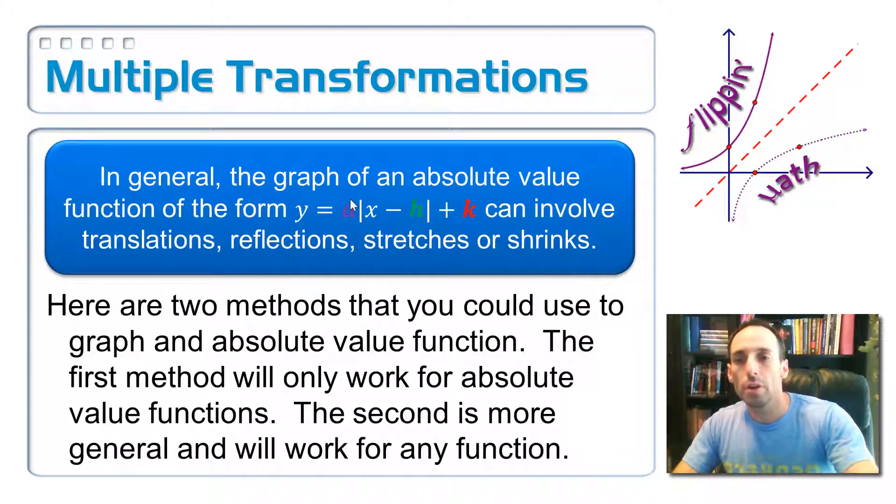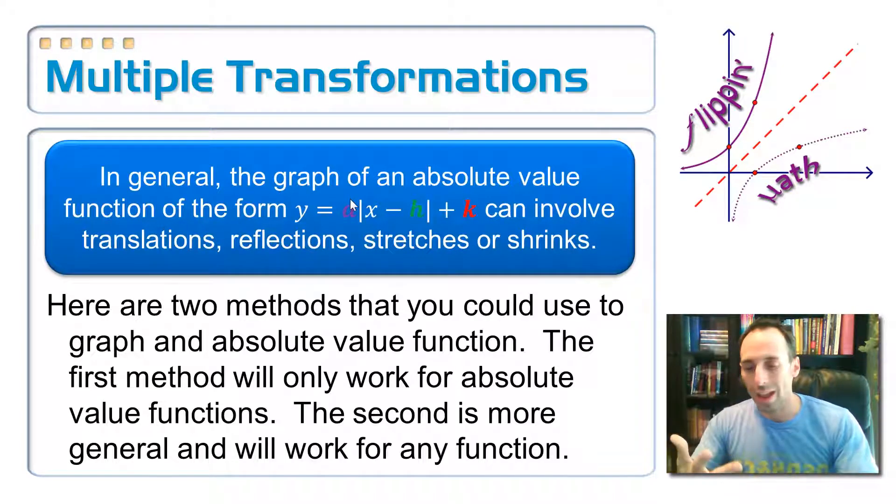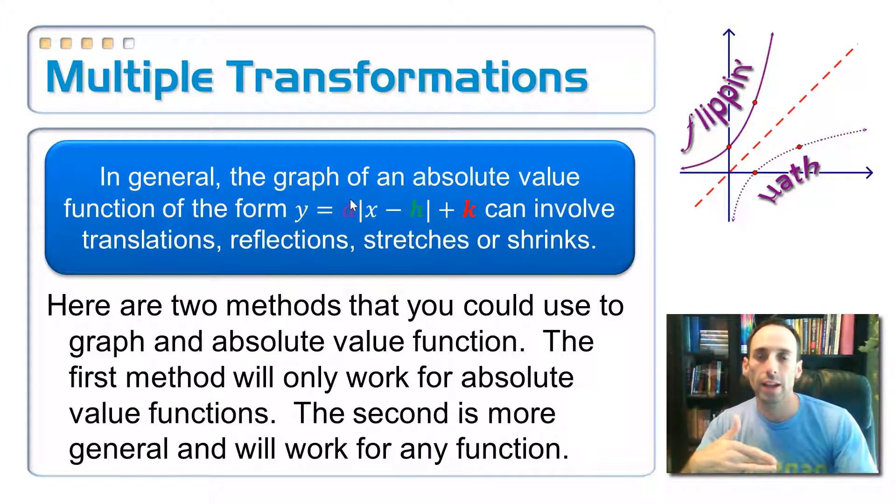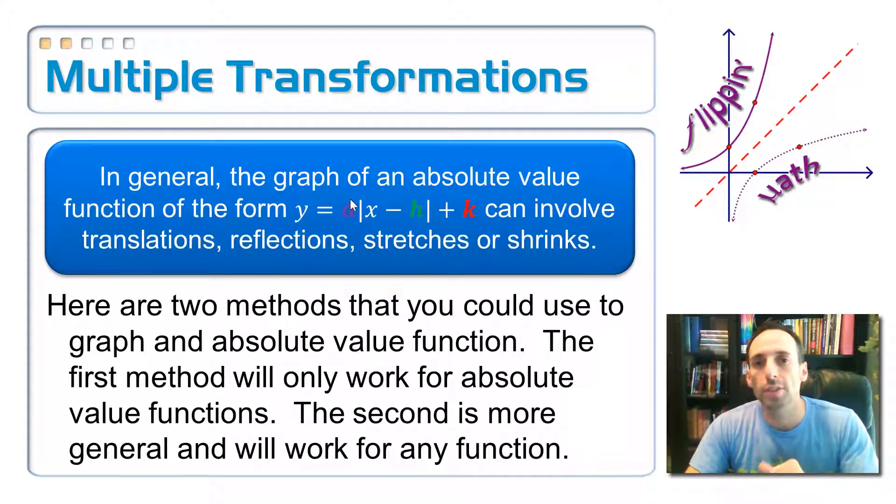So let's put these things together and let's do transformations all together with the a, the h, and the k. In general, the graph of the absolute value functions has translations in it, and it has stretches or shrinks, and it has reflections all together. I'm going to show you two different methods. The first one only works on absolute value parent functions, but it's probably the simpler way to do it. The second way that involves SRT transformations will work on any kind of parent function.